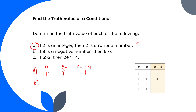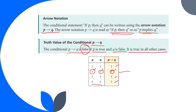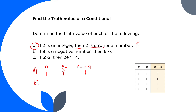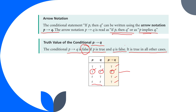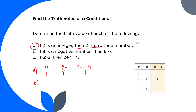Letter b: 'if three is a negative number then five is greater than seven.' Three is a negative number — false. Five is greater than seven — false. Since p is false and q is false, by the truth table the conditional statement is true. Therefore this is a true statement.